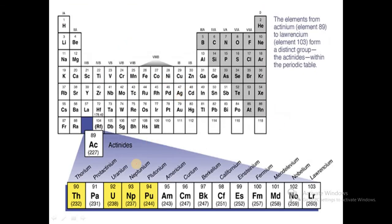The elements from actinium, atomic number 89, to lawrencium, atomic number 103, form a distinct group called actinides in the periodic table.